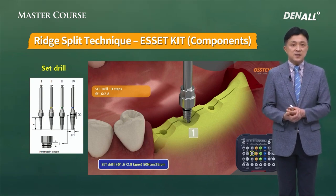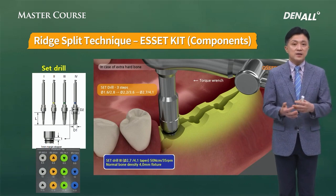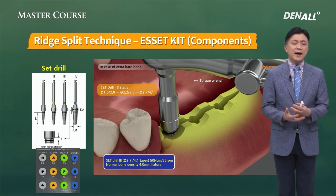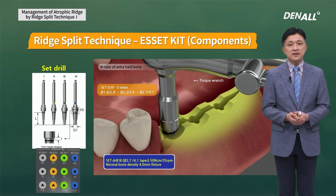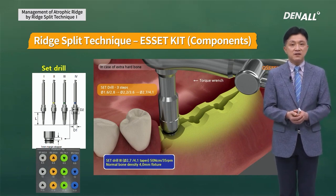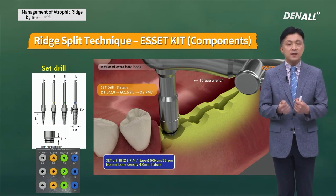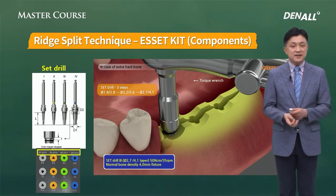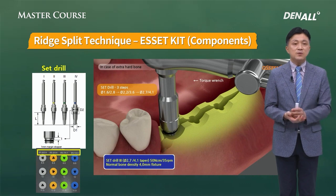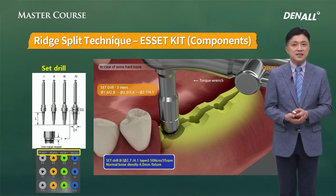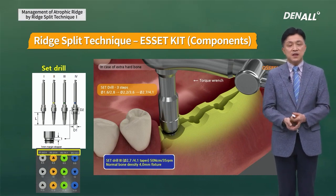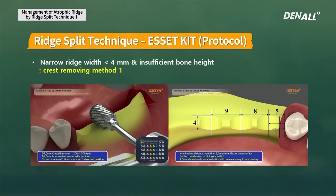The order of using set drills: in the case of a distal free end, start with the center, then distal, then mesial. Use the engine at first; in the case of the lower jaw where more torque is required, connect the hand wrench and do ridge split slowly. When placing a 4.0 mm implant use up to number 3; for a 4.5 mm implant use up to number 4. This is used most frequently when teeth number 5, 6, and 7 are missing — the distal free end case.